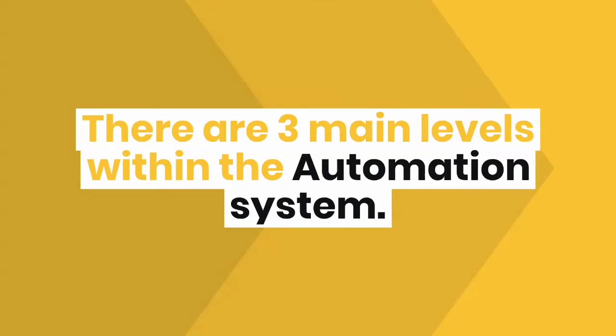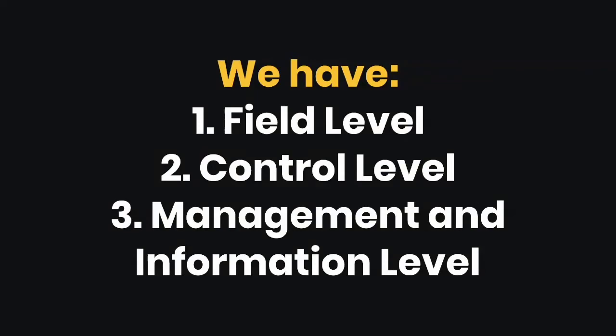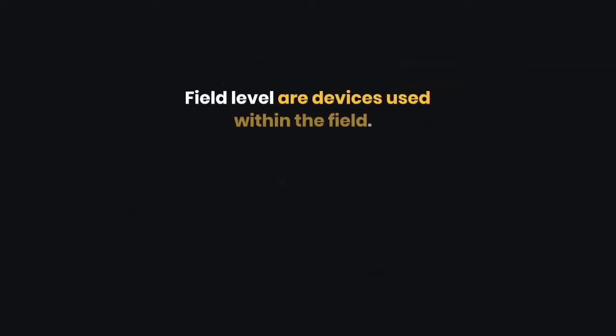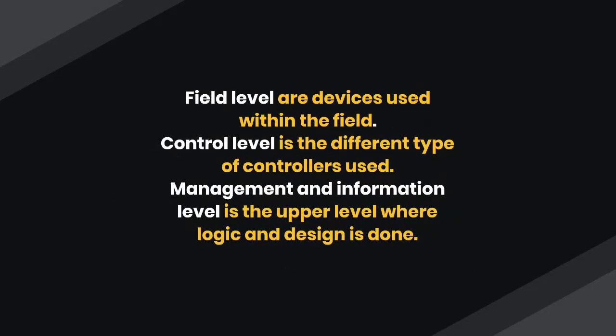There are three main levels within the automation system: field level, control level, and management and information level. Field level refers to devices used within the field. Control level refers to the different types of controllers used. Management and information level is the upper level where logic and design is done.